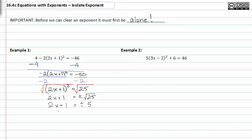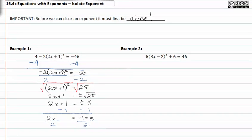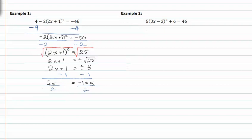Now I need to solve for x. I'll subtract 1 from both sides, and that gives me 2x = -1 ± 5. Now I divide by 2 to get x by itself.